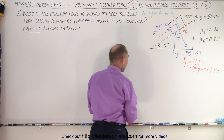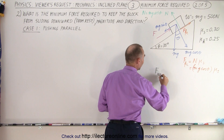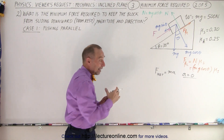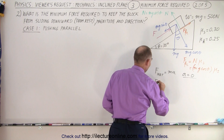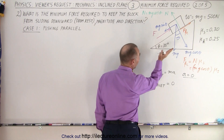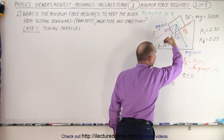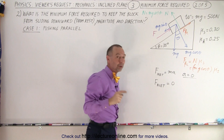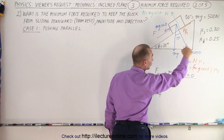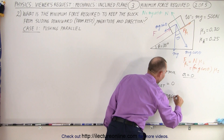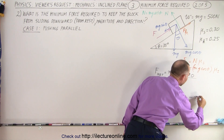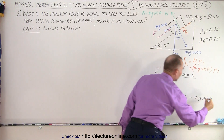Now we write the equation. We start with F net equals ma, but since acceleration must equal zero — because all we're doing is keeping the block from sliding down — F net equals zero. The forces we have: the applied force pushing up the incline, the friction force aiding, and mg sine theta (the parallel component of weight) trying to push the block down. So: F plus mg cosine theta times mu sub s, minus mg sine theta, equals zero.